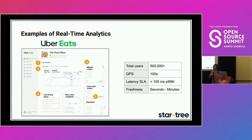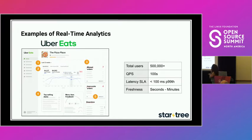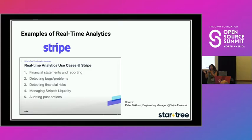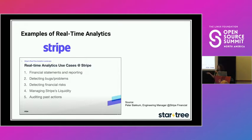One benefit of the actionable insights for these restaurants is that if reviews suddenly trend downward, they need to know right now. This is part of optimizing the user experience. Another interesting example is Stripe — a financial payment technology company with dozens of engineering teams. They have teams constantly working with fresh data and need to consolidate it into one view.